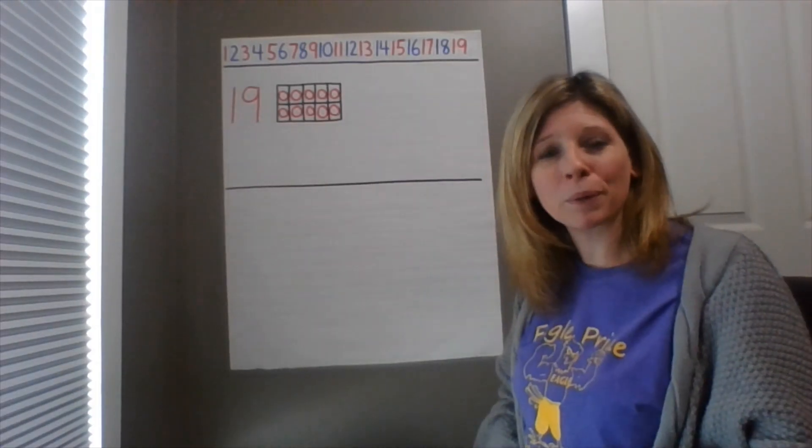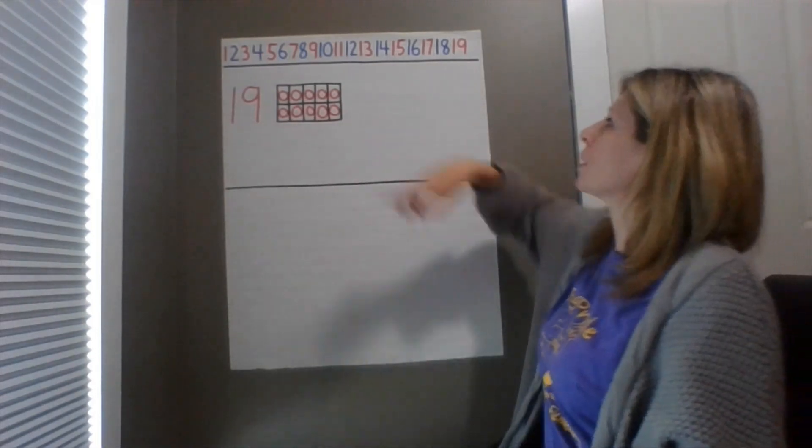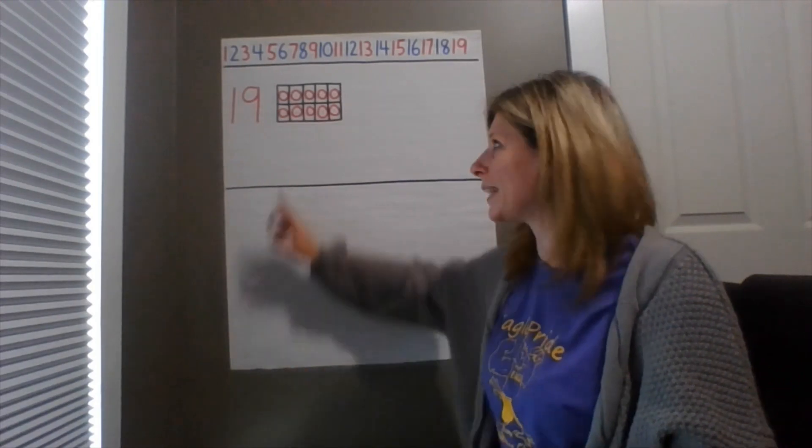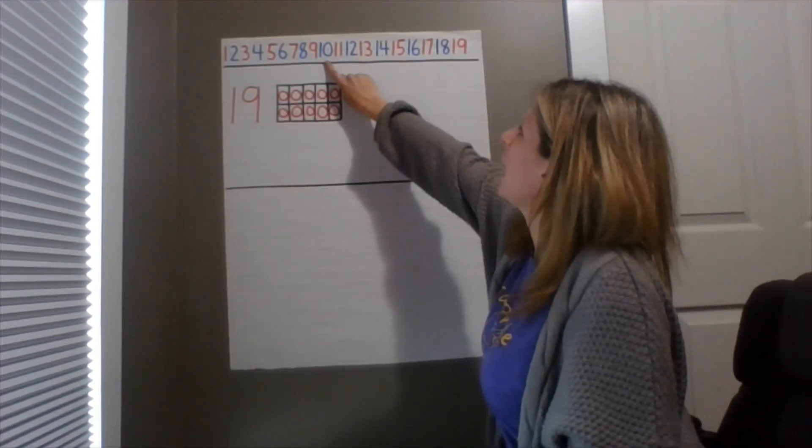And we're going to use our number line to help us figure out. So we're going to start at 10 because we have our group of 10. How many more do we need to get to 19? Let's see. Here we go. So we're at 10.